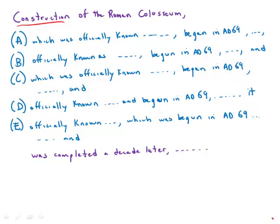In answer choice A, we have 'construction began' but then we don't have the word 'and' joining the two verbs — we need a joining word. So answer A is incorrect because it's missing that conjunction.